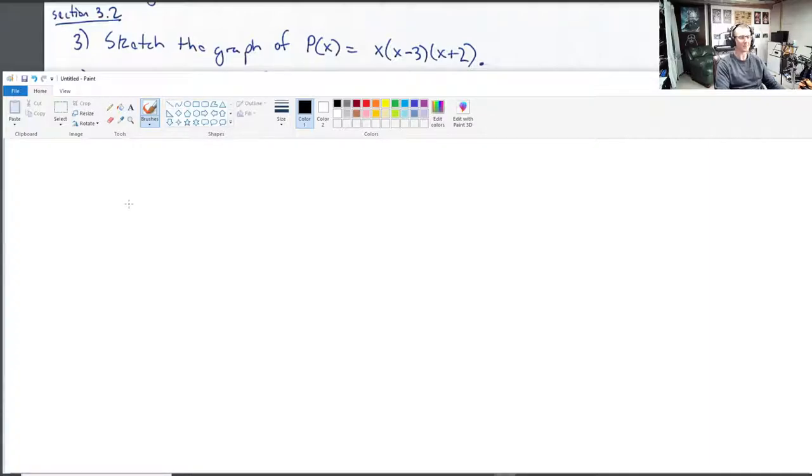There should be an asterisk on this movie, I think. Here we go. So sketch the graph of p(x) equals x times (x minus 3) times (x plus 2). There's an awful lot that we learned in this section about what the graph of a polynomial looks like. When I look at this, x times (x minus 3) times (x plus 2), I ask myself first, what is the leading term? What's the highest degree term? In this case, it's x cubed.